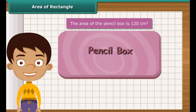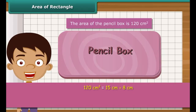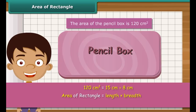Altogether, 120 squares have been arranged on the squared paper. It means the area of the pencil box is 120 square centimeters, which is 15 centimeters multiplied by 8 centimeters. So we can generalize that the area of any rectangle is obtained by multiplying its length and breadth.